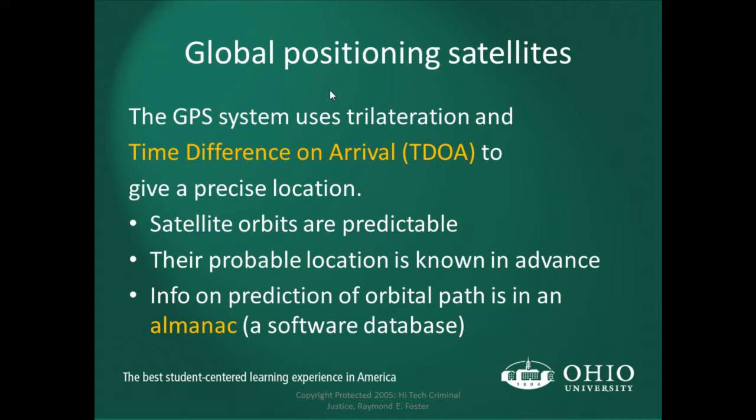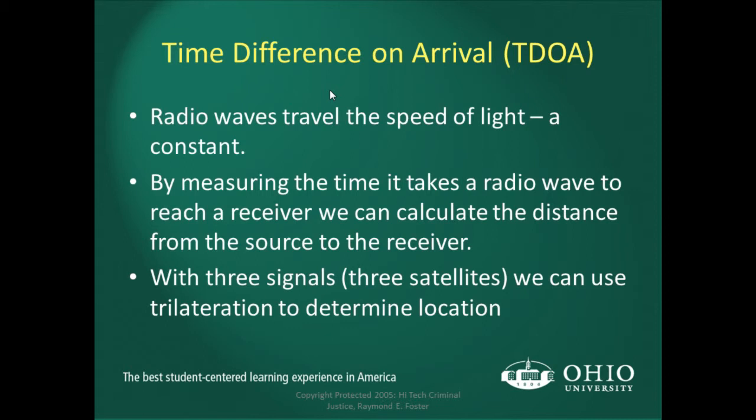Starting in 1970, the US launched 24 satellites into orbit; by 1994 they were all operational. They completed the Department of Defense Navigation Satellite Timing and Ranging system — Navistar. The satellites orbit the earth in predictable orbits, and by knowing that in advance, an algorithm or mathematical equation can be run to give the exact location. Radio waves travel at the speed of light — a constant speed — so by measuring the time it takes a radio wave to reach a receiver, we can calculate the distance from the source.